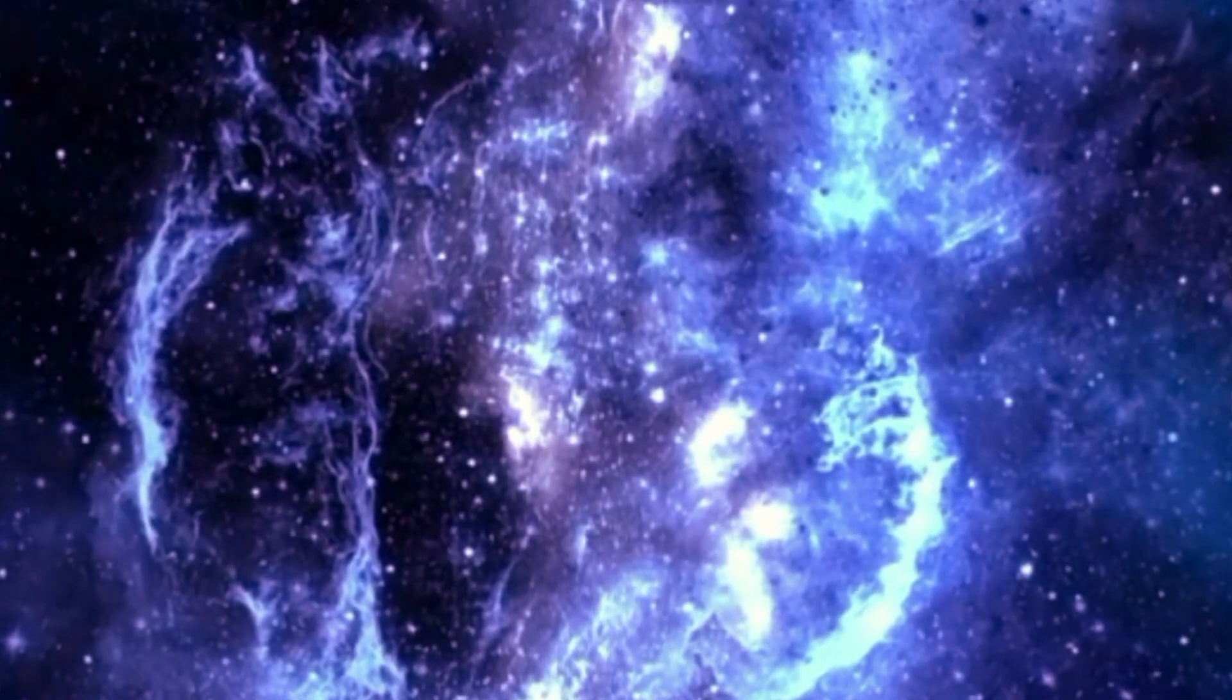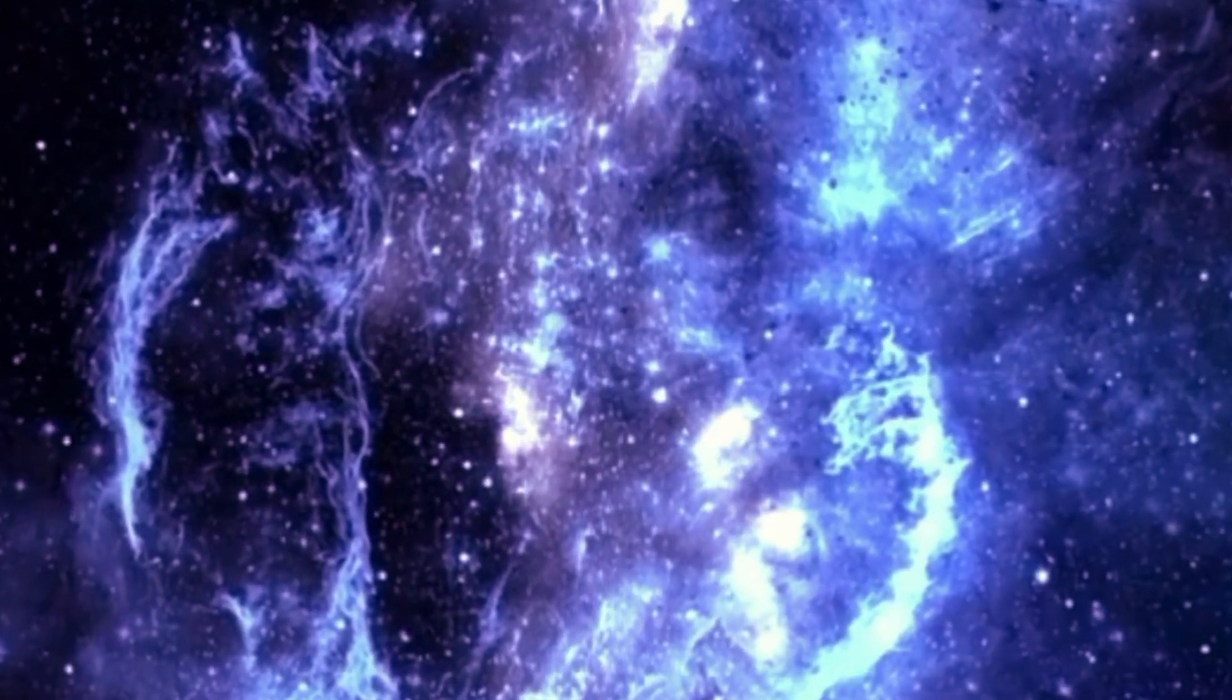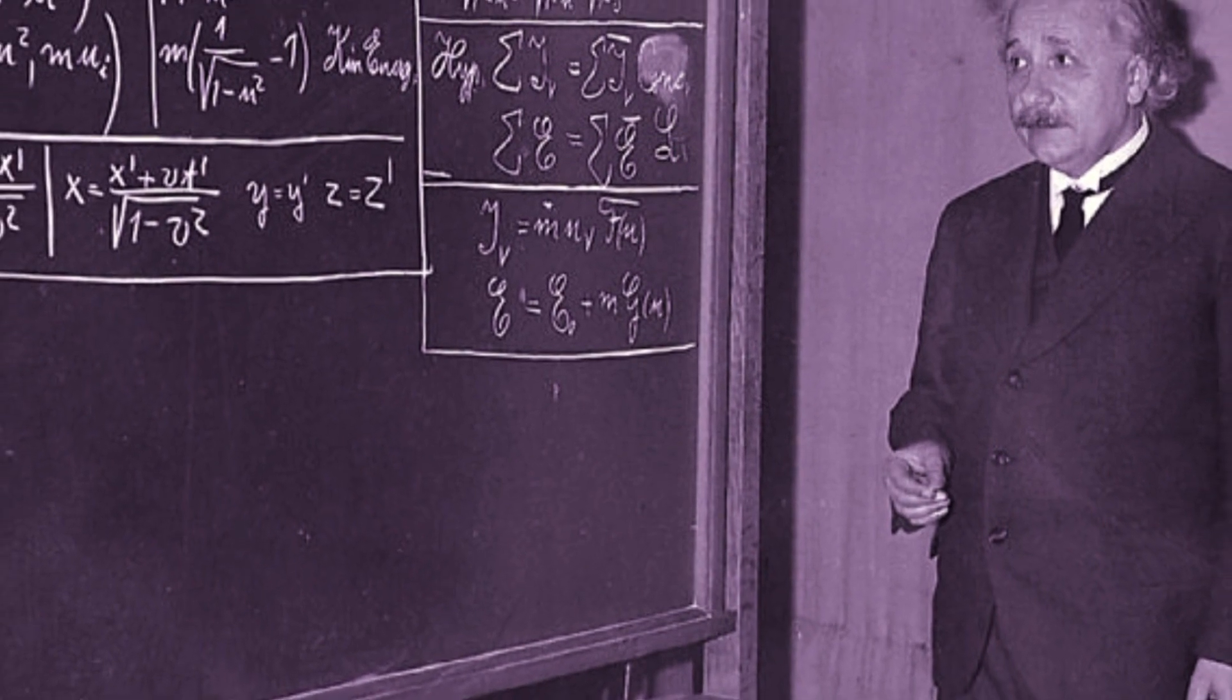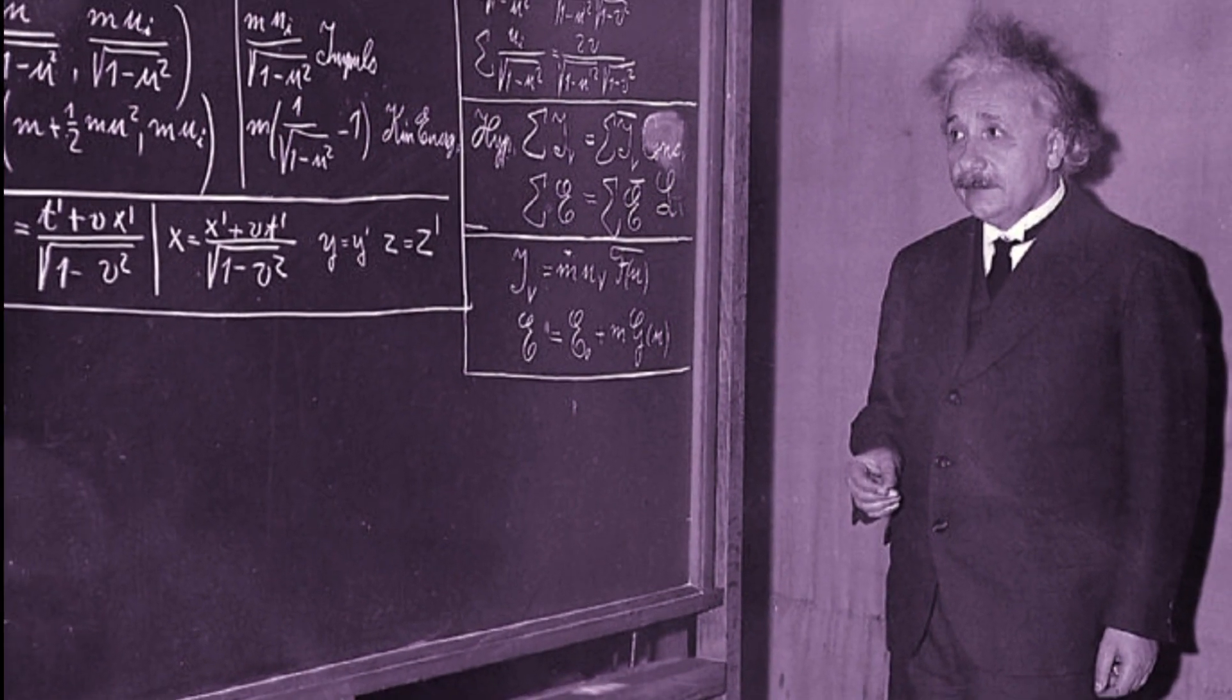Back in the early 20th century, Albert Einstein was working on his theory of general relativity. He sought to describe the nature of gravity and the structure of the universe.